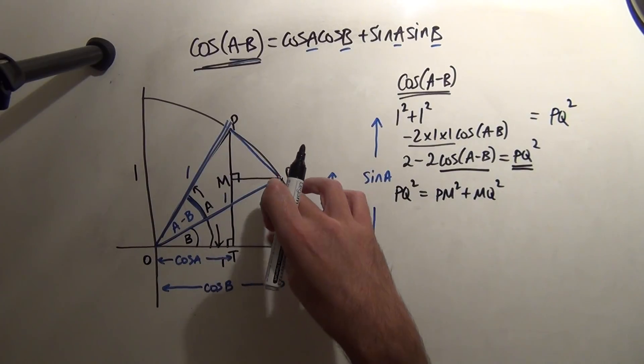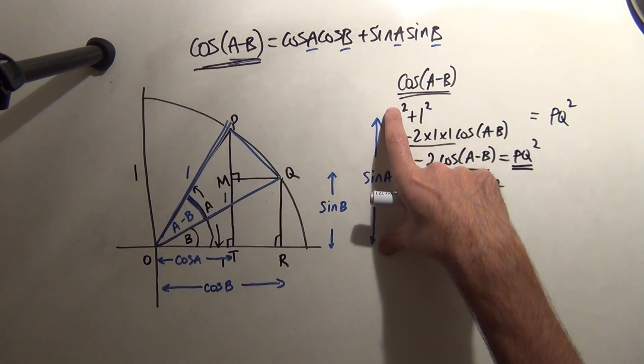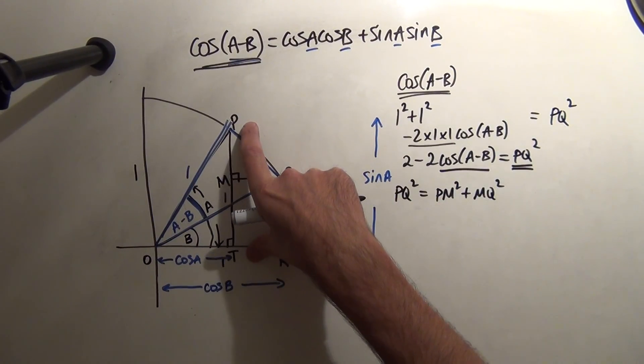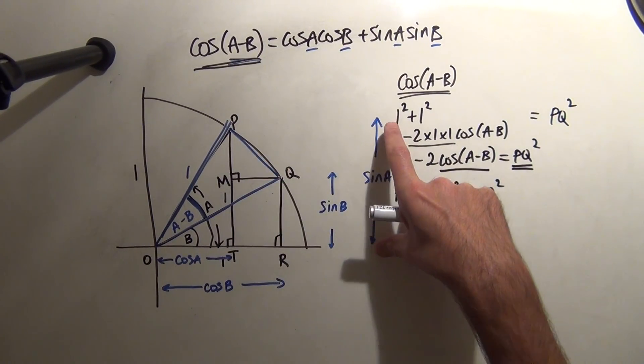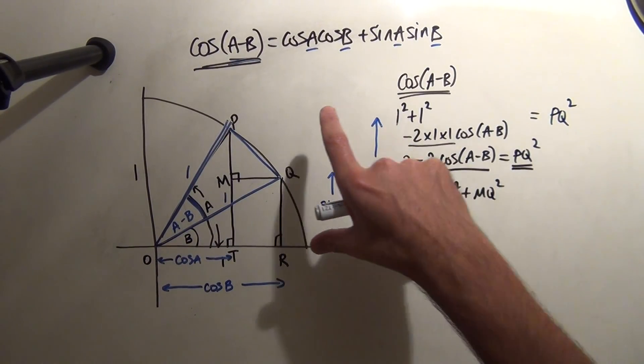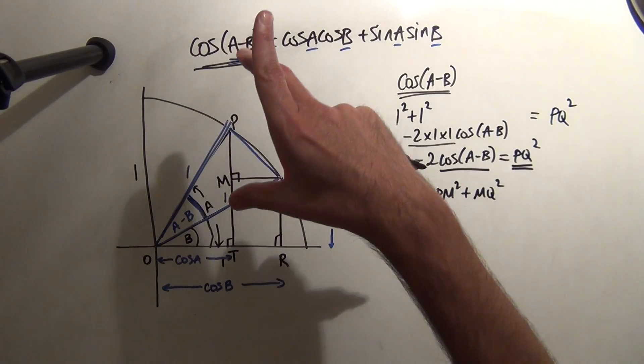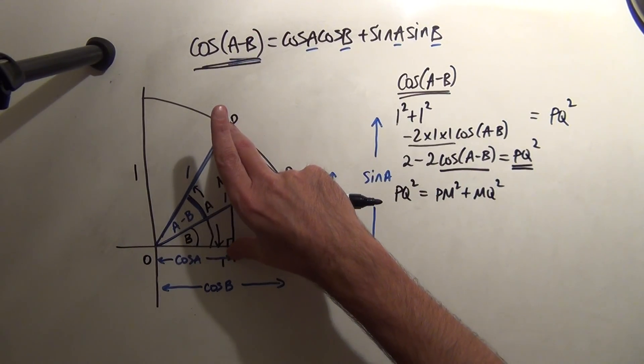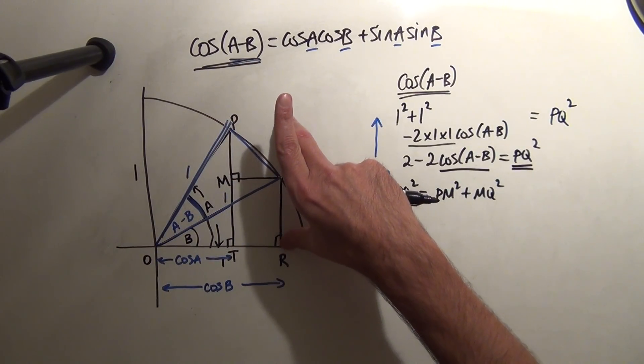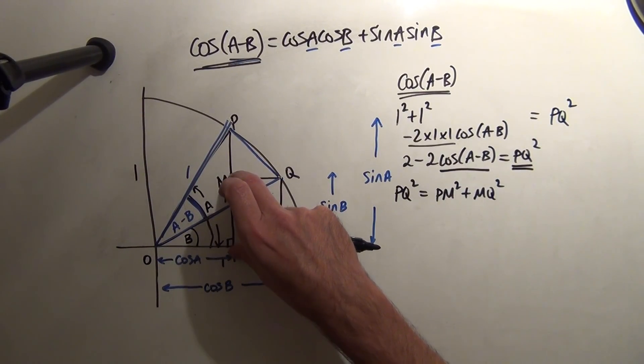Now, if you think about this, PM is going to be sine of A minus sine of B. Because that's the sine of A, sorry, sine of A minus sine B. Yeah, I've got this right, because I nearly confused myself here. Because this distance here, although it is the sine of A, if I bring it along here, that's also the sine of A. This distance here is the sine of B, so this must be the sine of B as well.